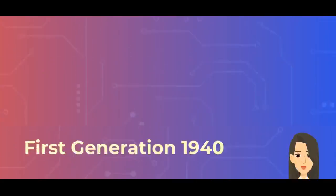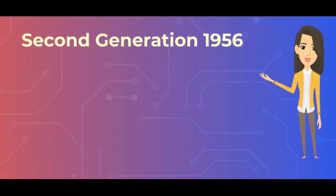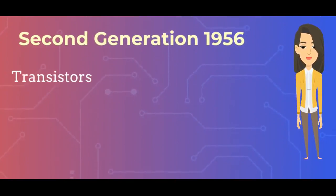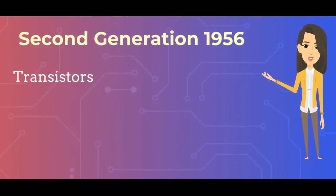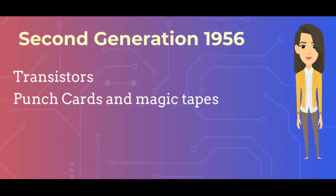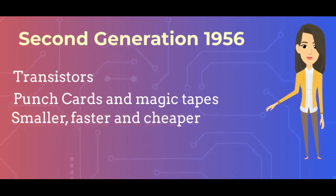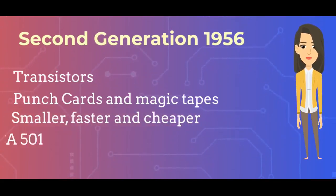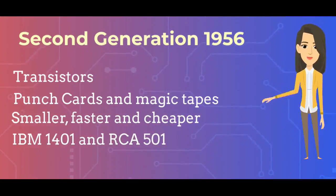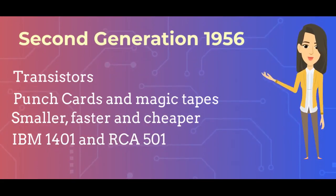Second Generation Computers, 1956: They used transistors. They used punched cards and magnetic tapes for input. They were smaller, faster and cheaper. IBM 1401 and RCA 501 are examples of second generation computers.